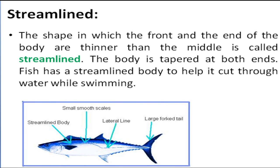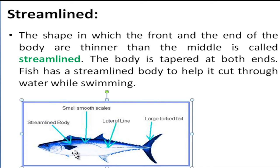Our next keyword is streamline. This is the shape in which the front and the end of the body are thinner, while the middle is thick. As you can see in the figure, the front and back of a fish are thinner than the middle. Fish have a streamline body to help them cut through water while swimming.